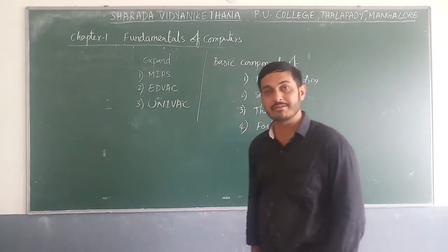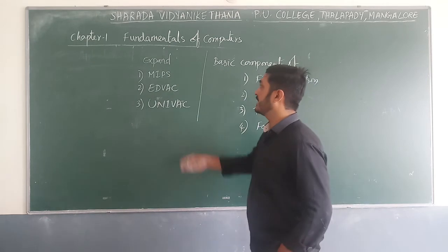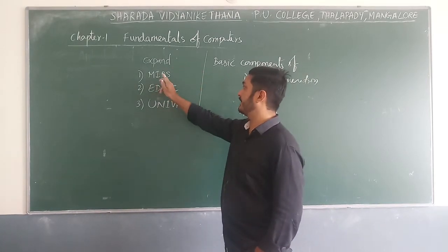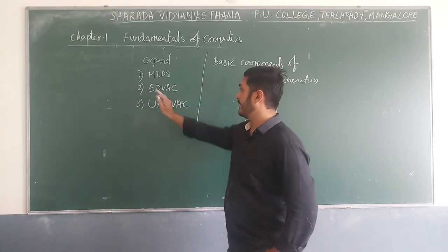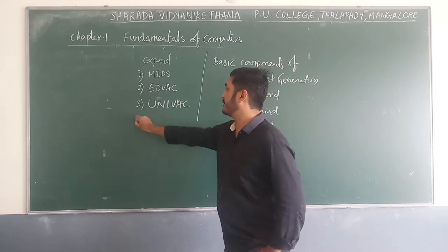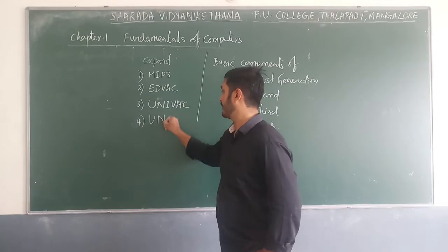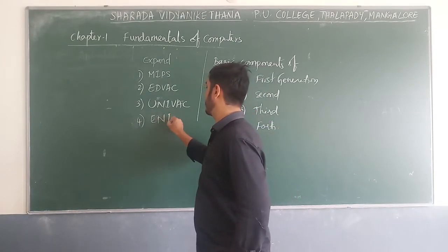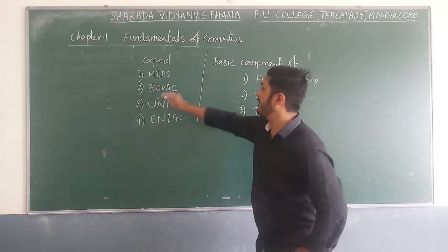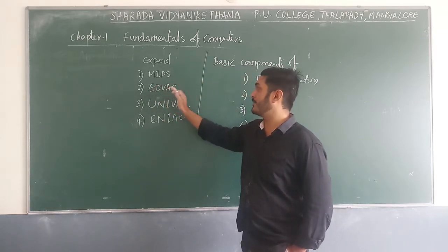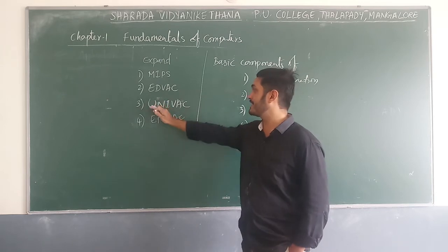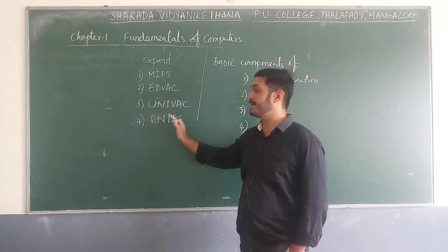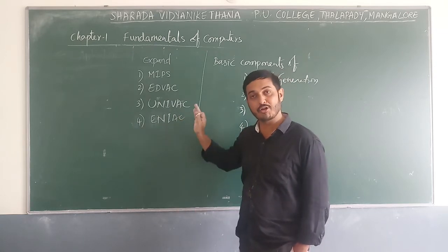Some important acronym expansions: MIPS means Millions of Instructions Per Second. EDVAC means Electronic Discrete Variable Automatic Computer. UNIVAC means Universal Automatic Computer. ENIAC means Electronic Numerical Integrator and Calculator.